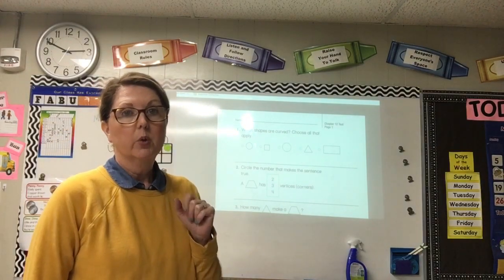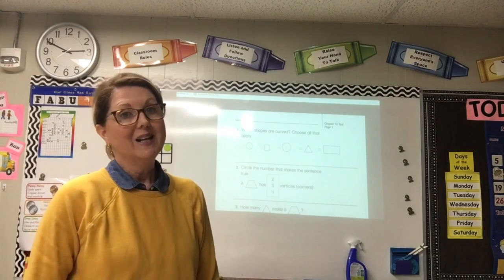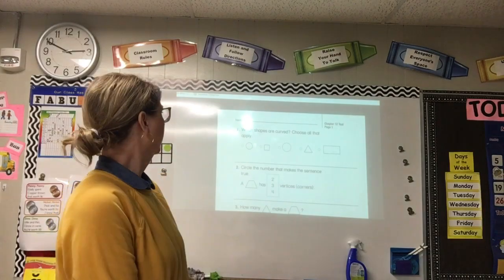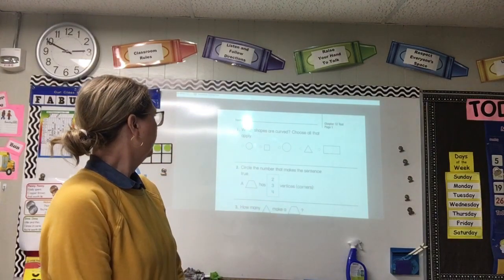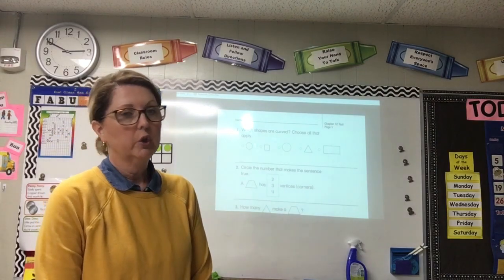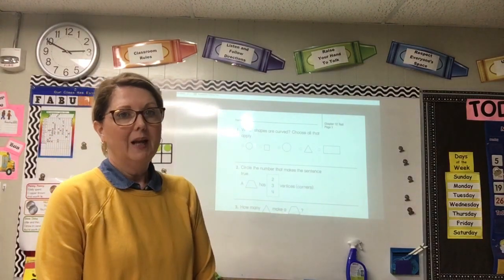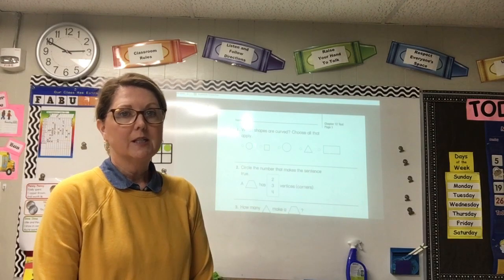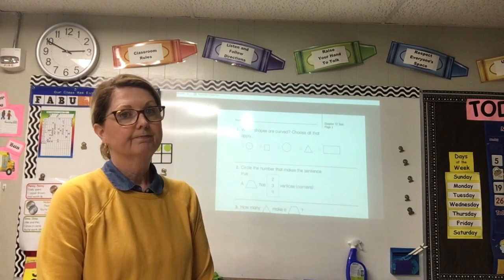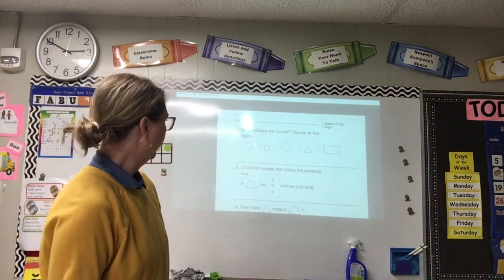A curved shape means it has really no flat sides, so think about that. Number two: circle the number that makes the sentence true. A trapezoid has blank vertices. Remember, vertices is a corner.